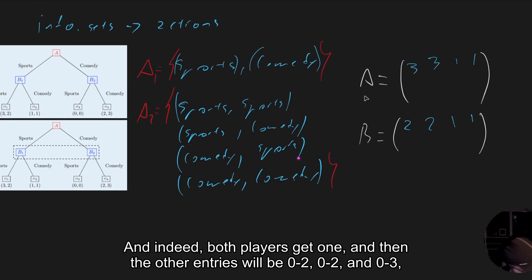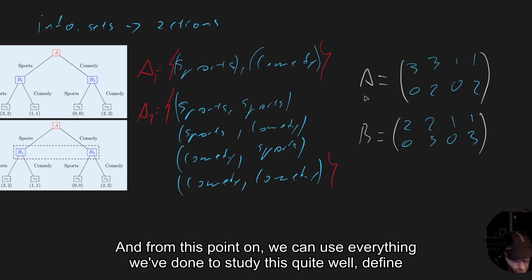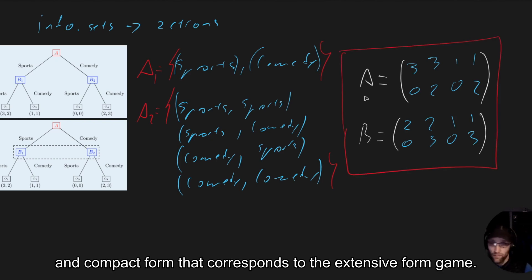And then the other entries will be zero, two, zero, two, and zero, three, zero, three. And from this point on, we can use everything we've done to study this quite well defined and compact form that corresponds to the extensive form game.